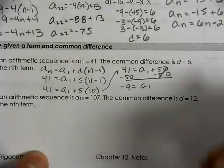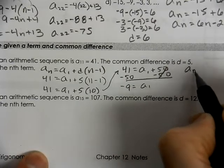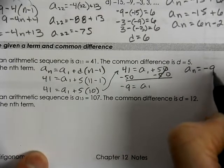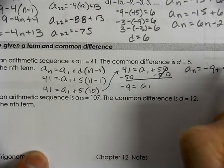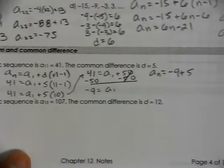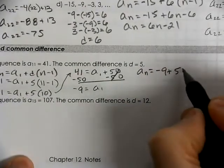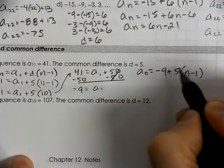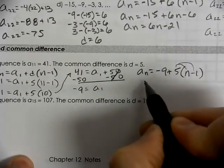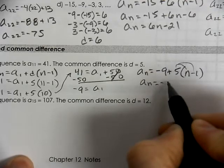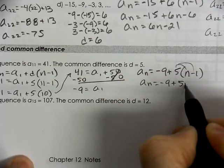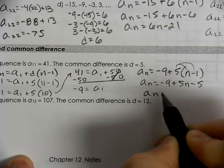So our rule is going to be a of n equals our first term plus our common difference times n minus 1. Distribute that through and collect like terms.